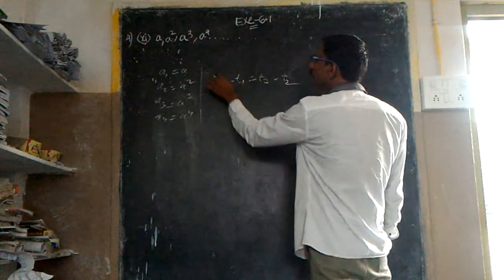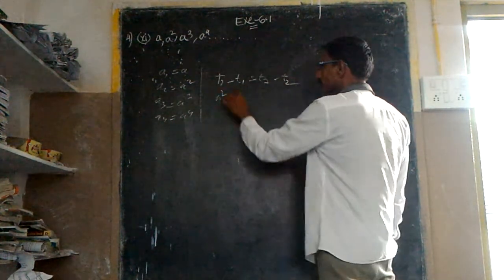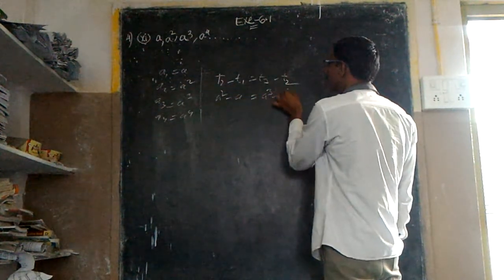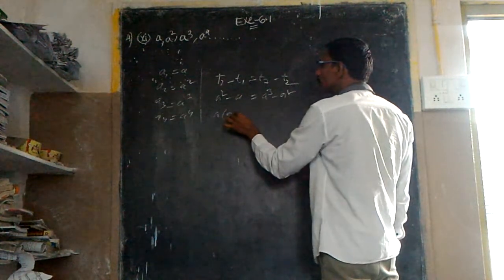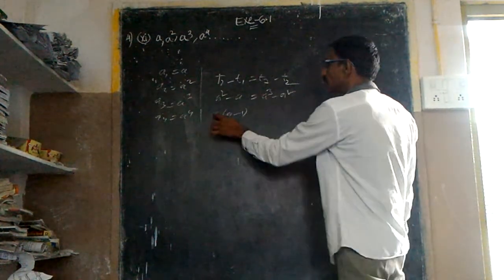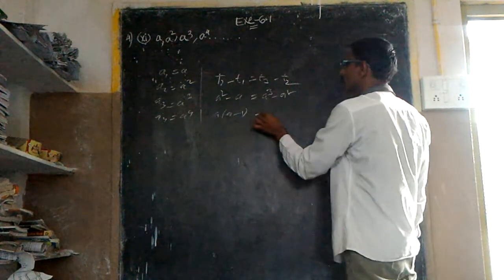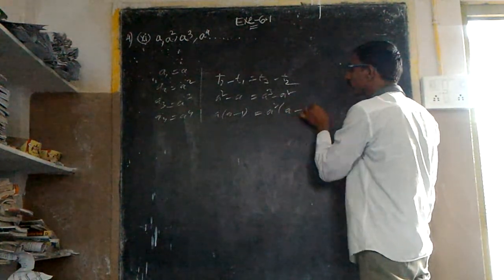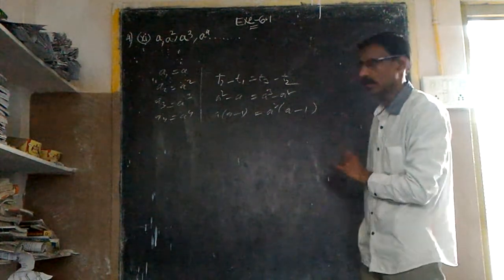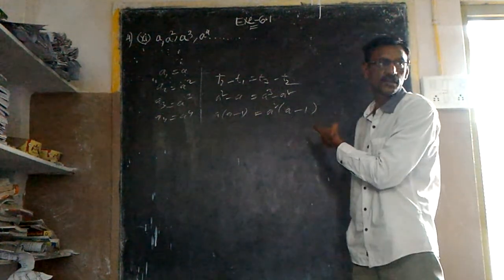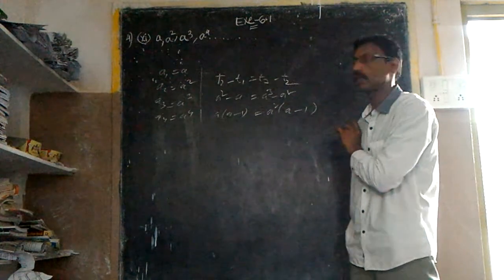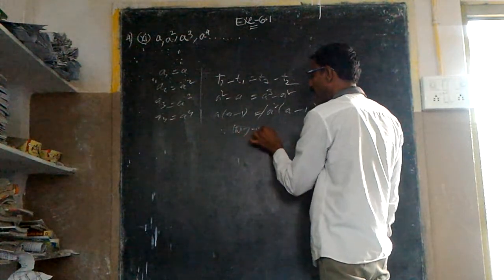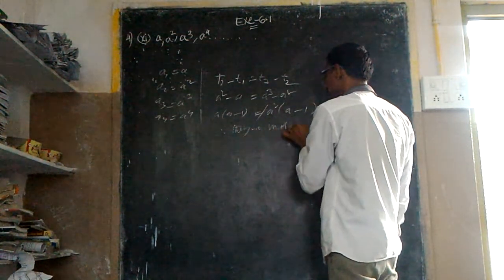So, if they are in A.P., A square minus A is equal to A cube minus A square. A square minus A gives A into A minus 1, and A cube minus A square gives A square into A minus 1. This is not equal to this one. Therefore, they are not in A.P.